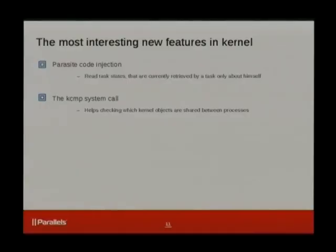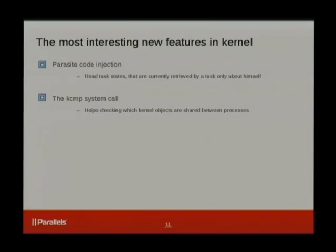Another feature is the so-called KCMP system call. It takes two processes and objects used by those processes — for example, virtual memory, open files, or filesystem view — and tells you whether the objects used by the two processes are equal, or which one is above the other. This system call is used by us to determine how objects are shared between processes. We compare processes pair by pair and sort the results to see which objects are shared between which processes. Before this system call, it was impossible to distinguish situations like when a process opened a file and then did a fork, causing the file to be shared between parent and child.